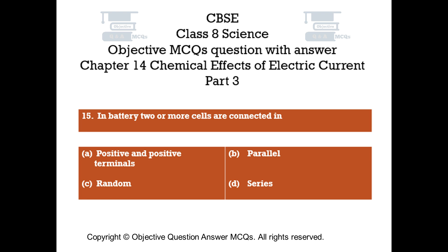Question number 15. In a battery, two or more cells are connected in: Option A: Positive and positive terminals. Option B: Parallel. Option C: Random. Option D: Series.